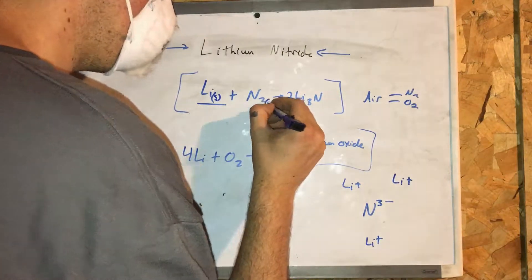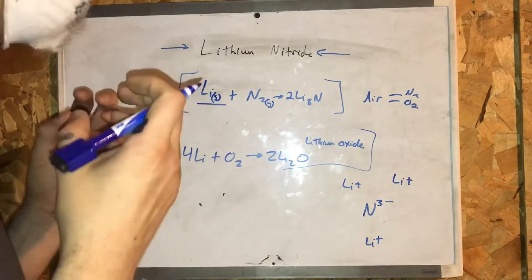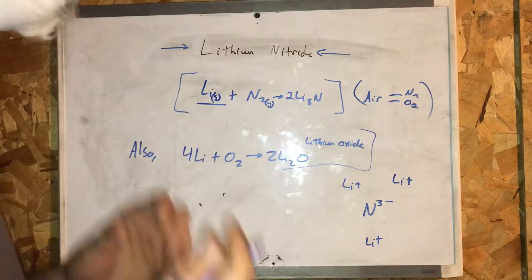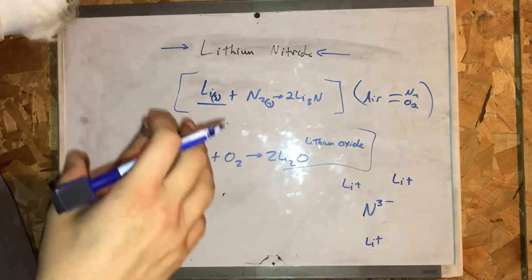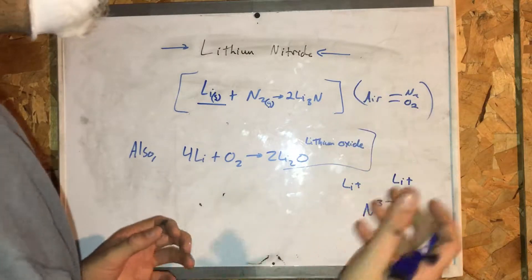And the easiest way to do that, to create lithium nitride, is to burn lithium in the presence of air. Now, air is comprised of mostly nitrogen, and also oxygen.